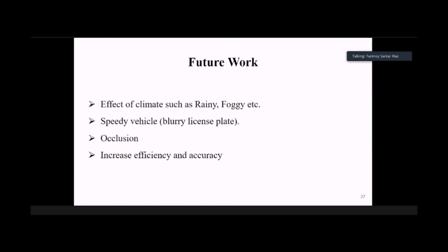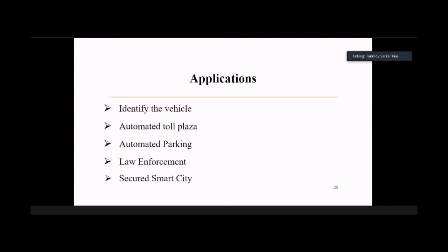Based on this research, we can add more images to capture the effect of climates such as rainy, foggy, and hazy. We can also add images of speedy vehicles while the license plate is blurry. License plates can be occluded by another vehicle that can be reconstructed. And of course, we can always increase the efficiency and accuracy. This is the future work based on our model.